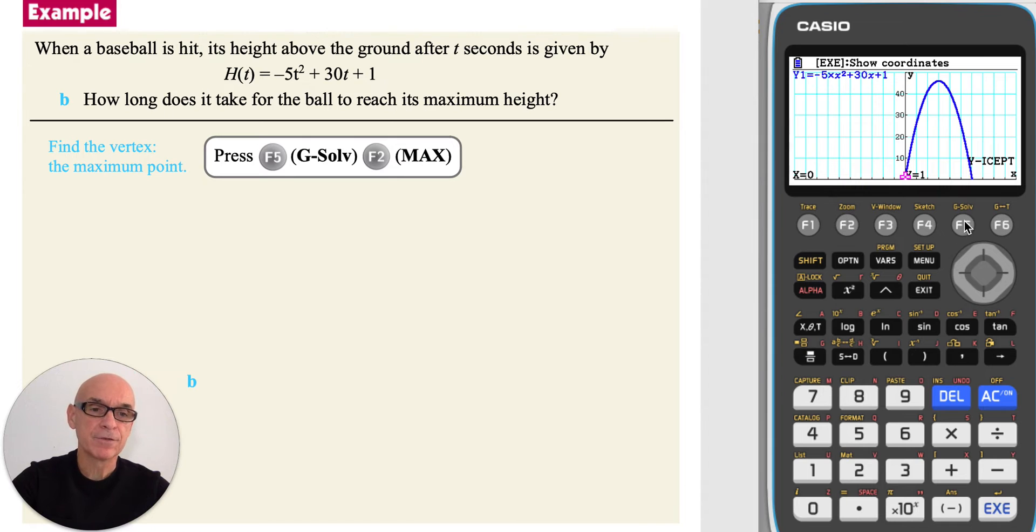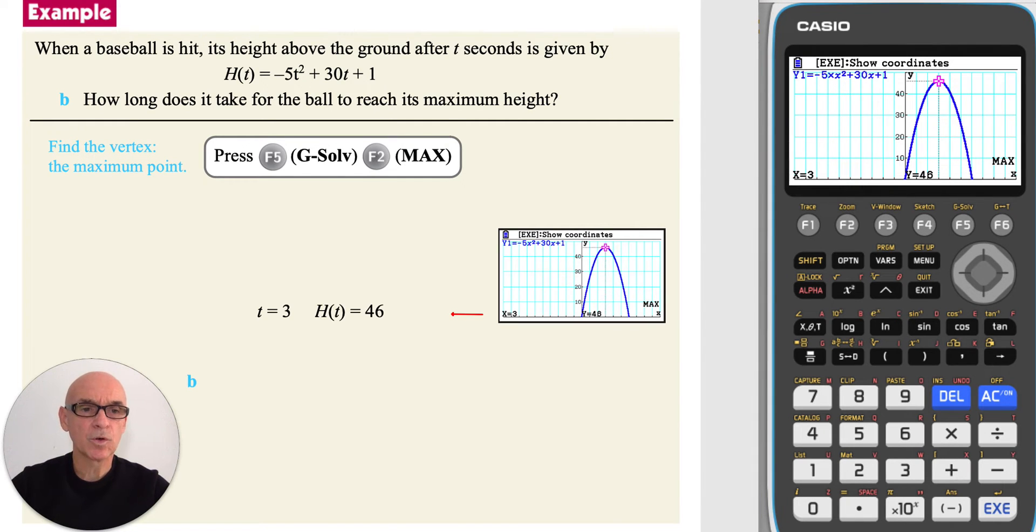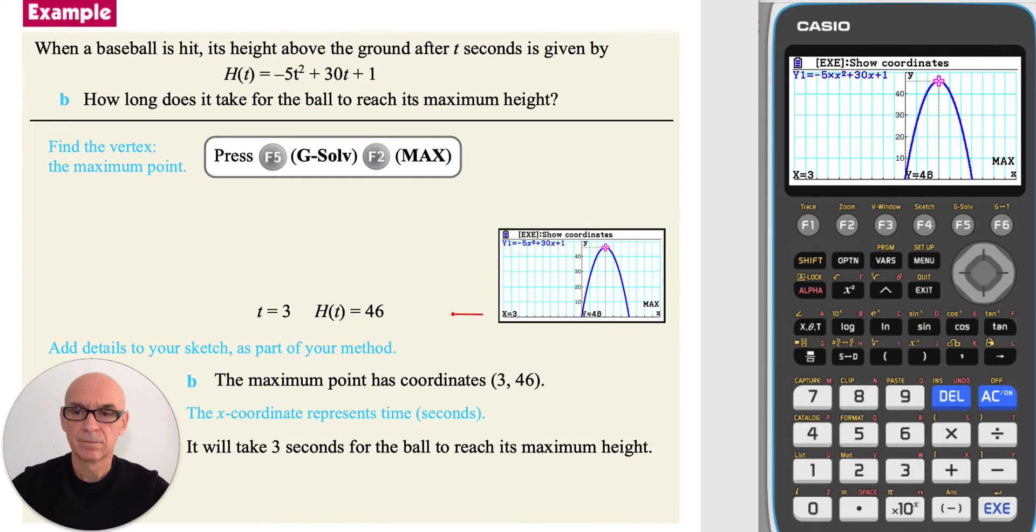Pressing f5 for g-solve, and f2 for a maximum point. The coordinates of the maximum point are 3 comma 46. Add in these details to your sketch as part of your method. So the x-coordinate represents the time. So it will take 3 seconds for the ball to reach its maximum height.